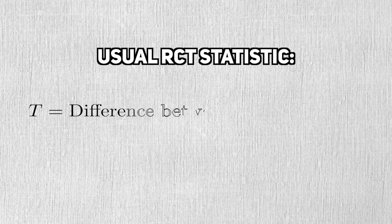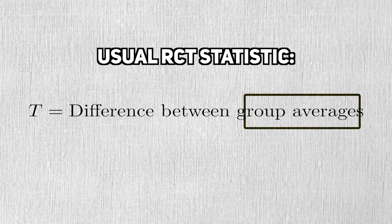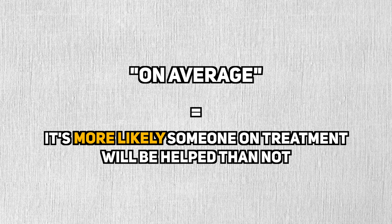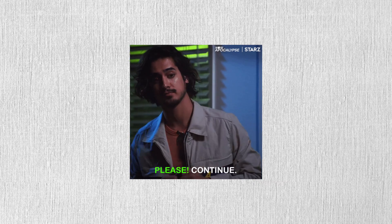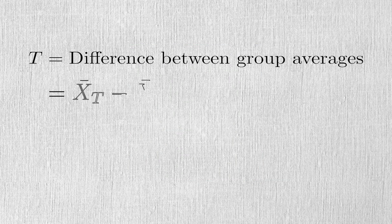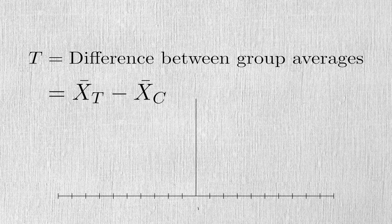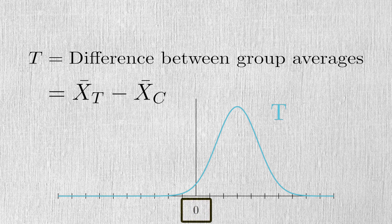By nature, RCTs measure average effects. On average, a person will benefit from a medication that passes an RCT. Let's think about this a little deeper. If an RCT finds a significant positive treatment effect, that means that the data suggests that a null effect of zero is unlikely to have come from the data.